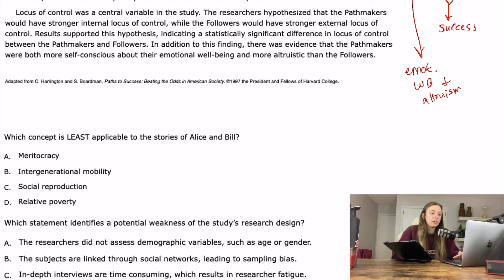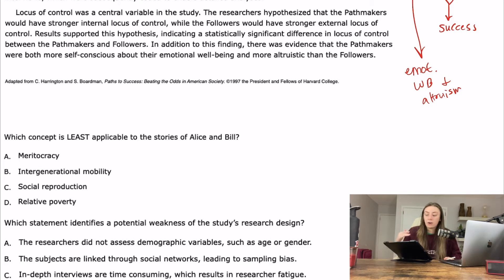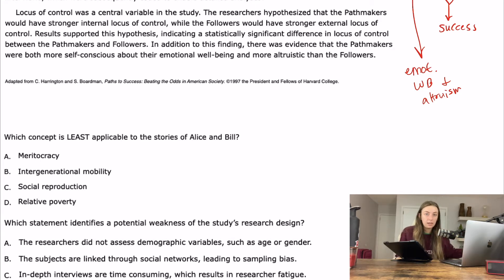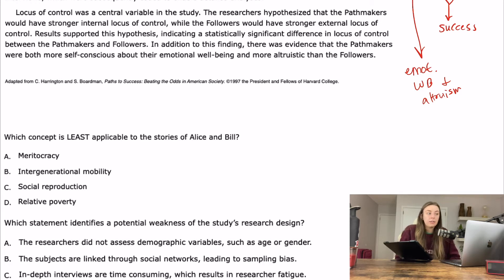The first question asks: what concept is least applicable to the stories of Alice and Bill? Alice and Bill were path maker types — low SES. The way I like to do these questions is go through and find concepts that are applicable to Alice and Bill and mark them off. Just make sure you're paying attention to the fact that they're asking for the one that is least applicable.